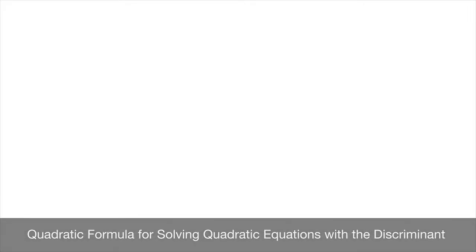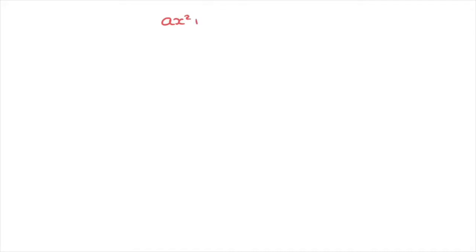We now learn about the quadratic formula as well as the discriminant for solving quadratic equations. Those are any equation looking like ax squared plus bx plus c equals to zero. For instance, the equation 3x squared plus 2x minus 5 equals to zero. By the end of this tutorial you should know how to solve that. During the first couple of minutes we're going to be writing a two-step method for solving quadratic equations.